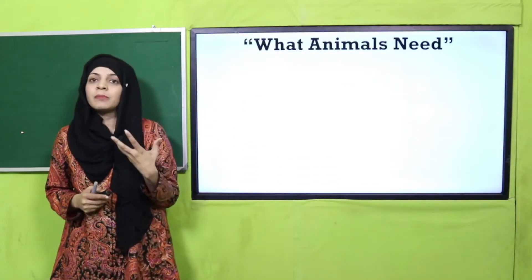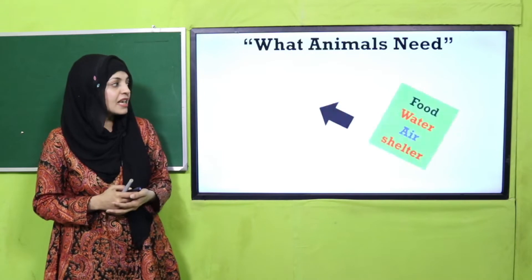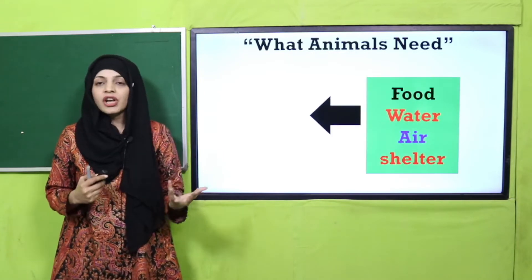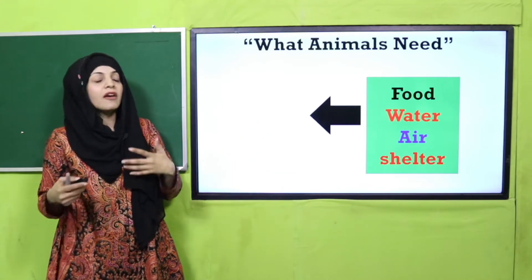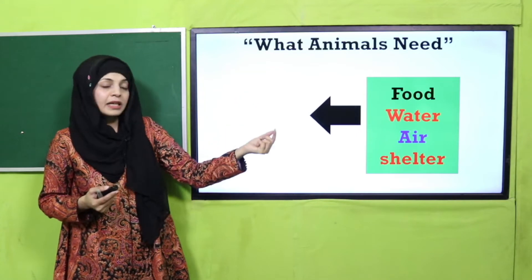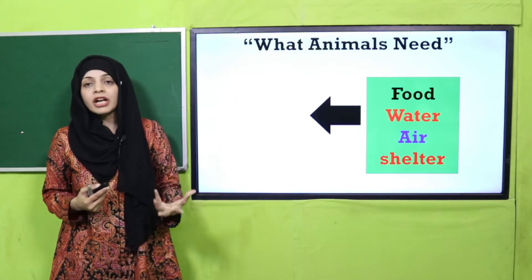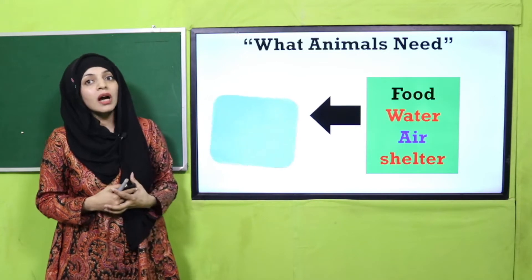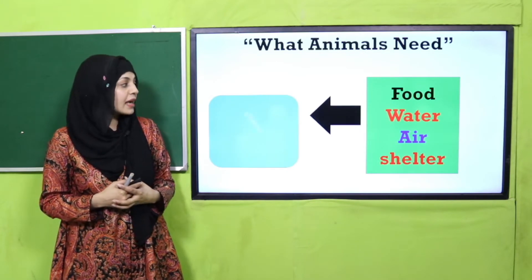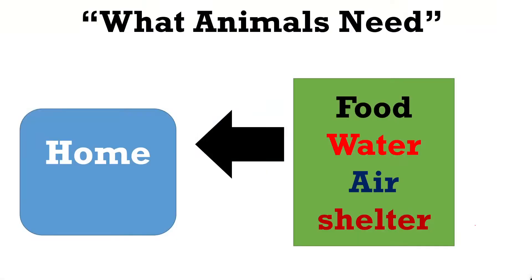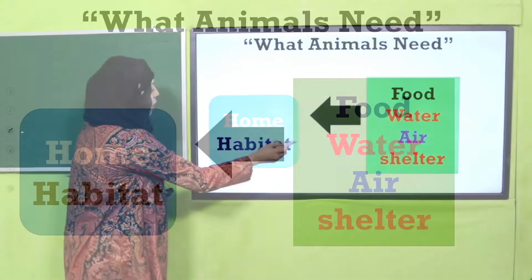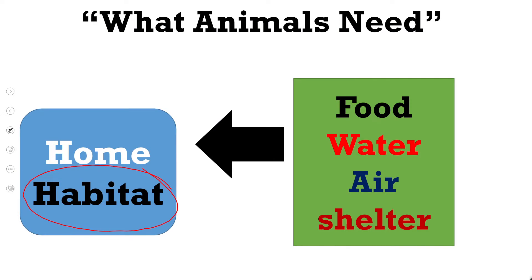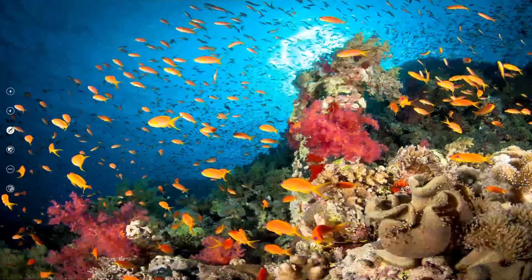Both need water, air, and shelter — a home. So animals need food, water, air, and shelter. Just like humans, animals also need food, water, air, and shelter to stay alive. And all these things come from their home — which has another name called habitat. So your unit's name is also Habitat, and today we will define the word habitat.